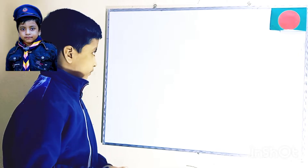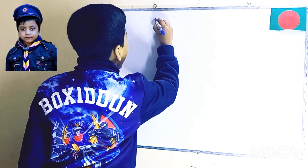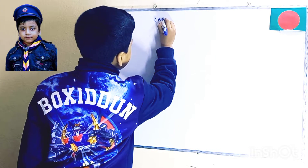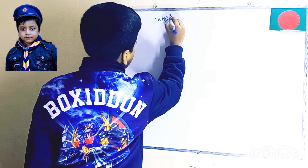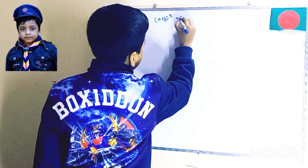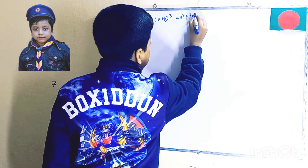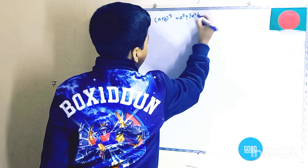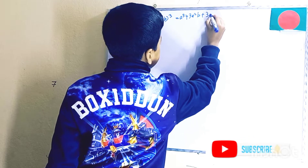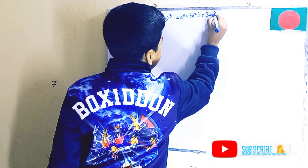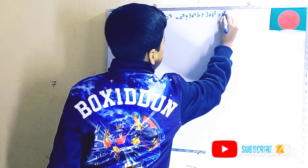Let's start with the formula, and that is A plus B whole cube is equal to A cube plus 3A square B plus 3AB square plus B cube.